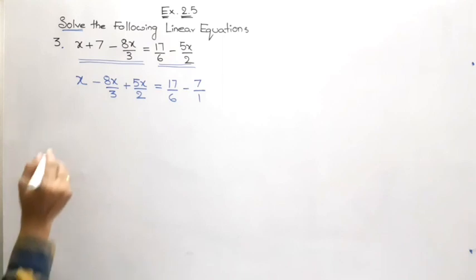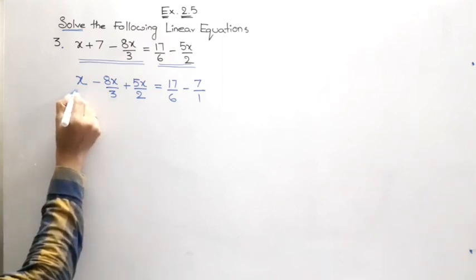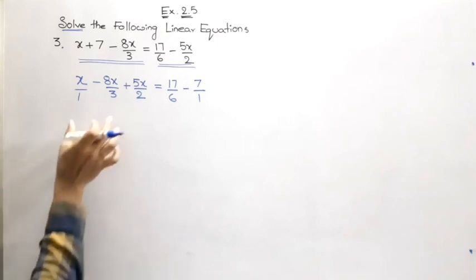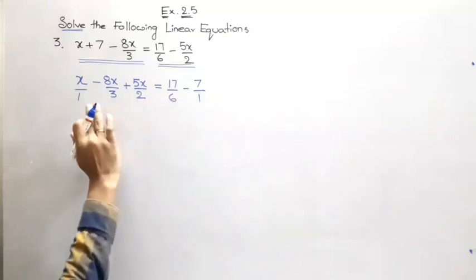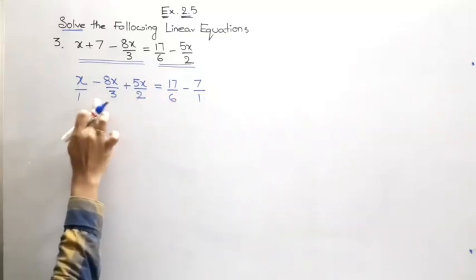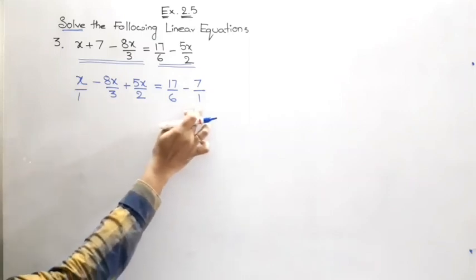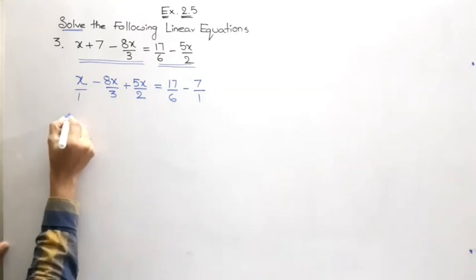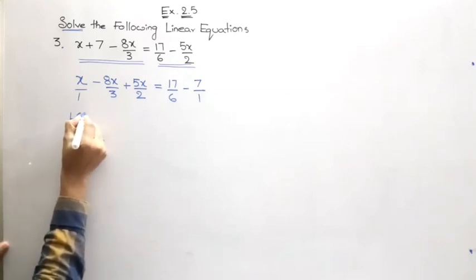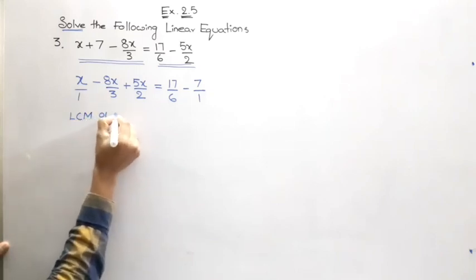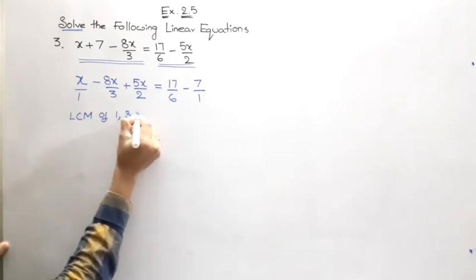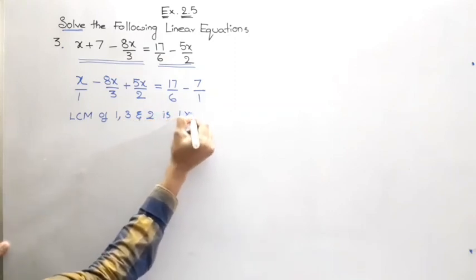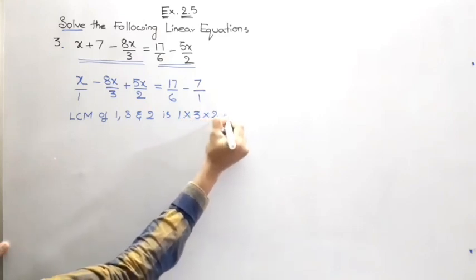That is equal to 17 by 6 put as it is. And the only constant term which we have on the LHS is plus 7. So plus 7 if we transpose to the other side it will become minus 7. And just for the convenience as we don't have a denominator let us keep it 1. Now look, on the LHS also x is not carrying any denominator so keep it 1. On the LHS and the RHS we have different denominators. On the LHS we have 1, 3, 2 which are different to each other. And here 6 and 1 which are different to each other. Hence what we will do, we will go for the LCM of the denominators.